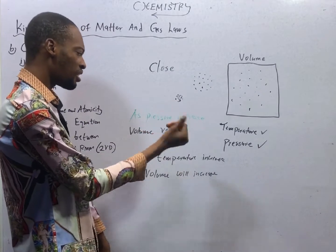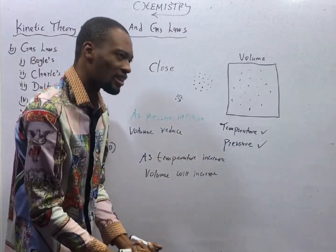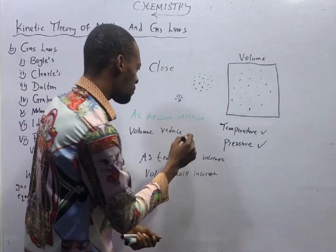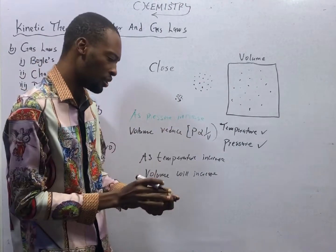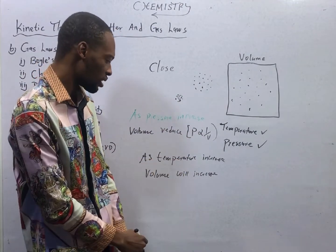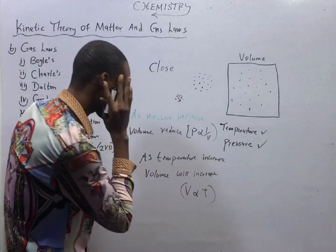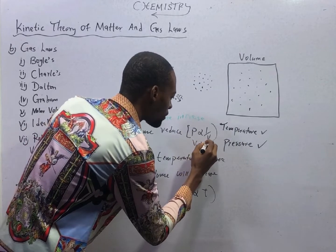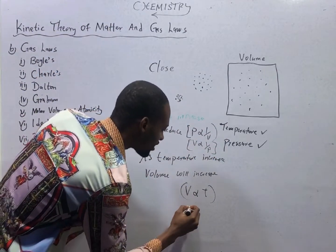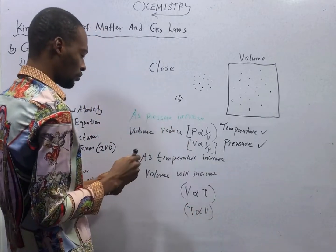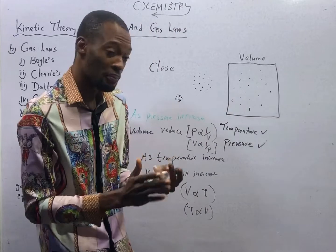You notice that as temperature increases, volume increases. As temperature increases, volume increases. Volume goes down as pressure goes up. We therefore say that pressure is inversely proportional to volume. Since as pressure increases volume will reduce, and as temperature increases volume will increase, this means volume is directly proportional to temperature and inversely proportional to pressure.